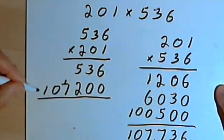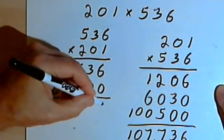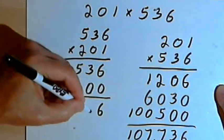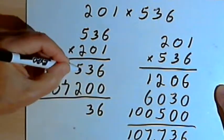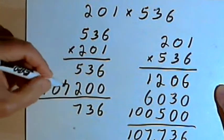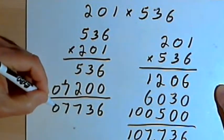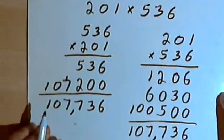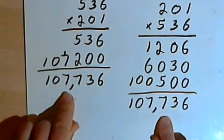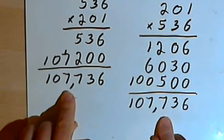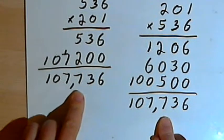I'll add those numbers together. 6 plus 0 is 6. 3 plus 0 is 3. 5 plus 2 is 7. Then I've got a 7 and a 0 and a 1. And my answers match. In both cases, I've got 107,736.